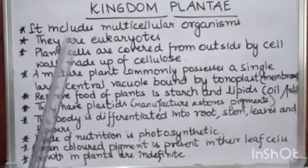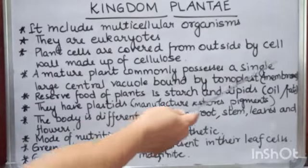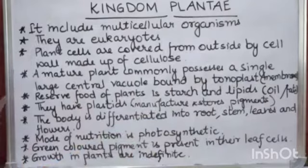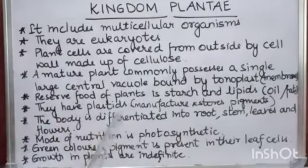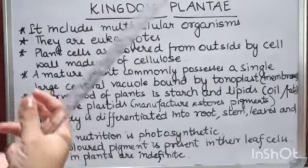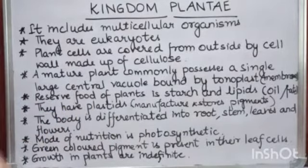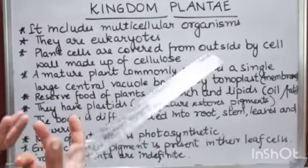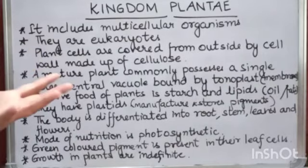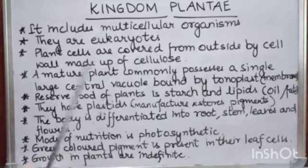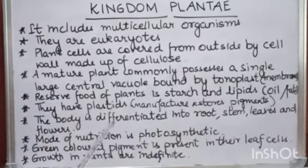A mature plant commonly possesses a single large central vacuole bound by tonoplast. A vacuole is a space in the cytoplasm of a cell, enclosed by a membrane, and usually contains substances dissolved in water. Its function is to store various substances, including waste products of the cell. Most animal cells do not have vacuoles; some do, but they are much smaller than those found in plant cells.